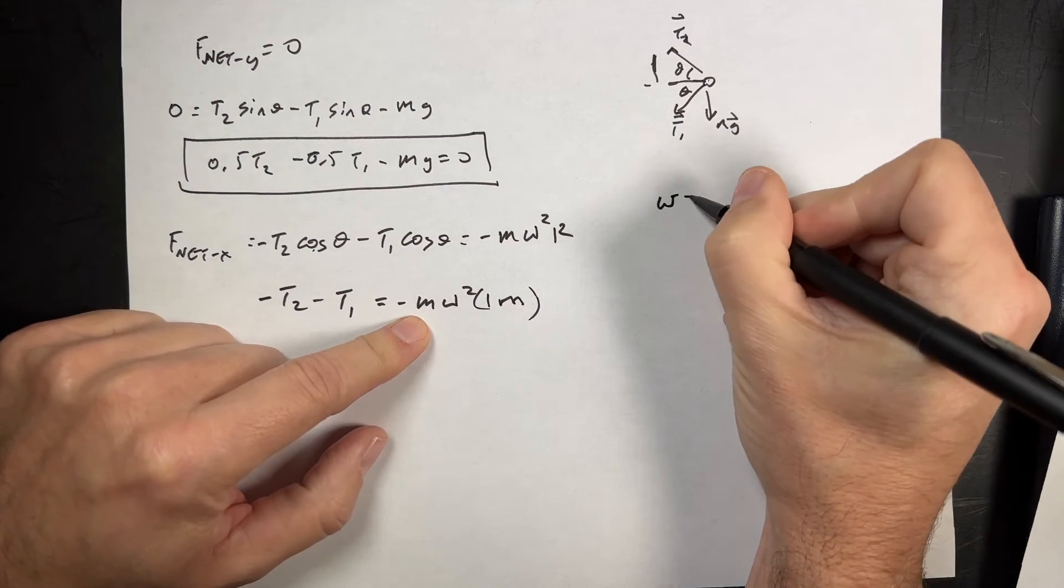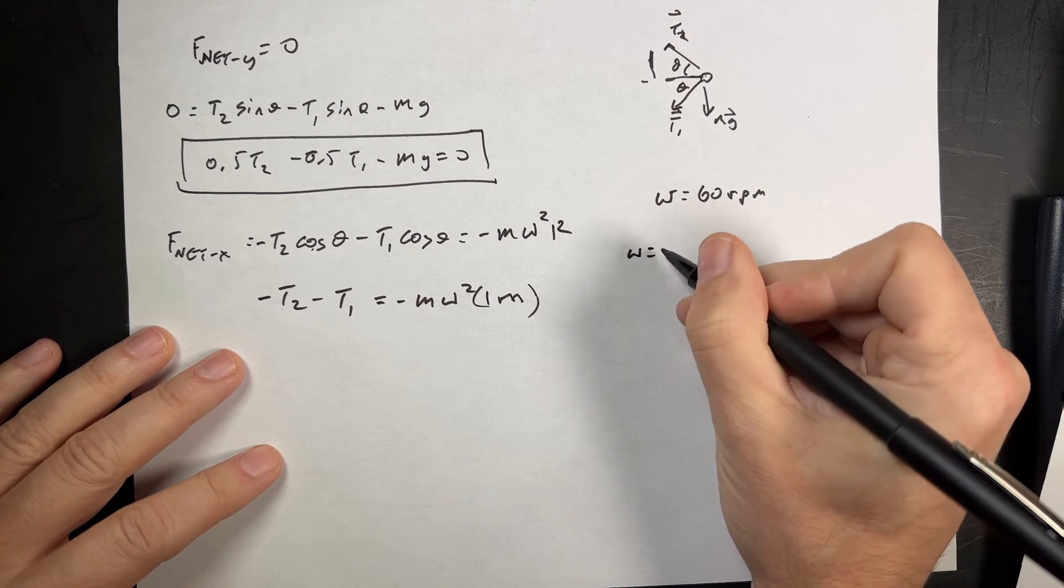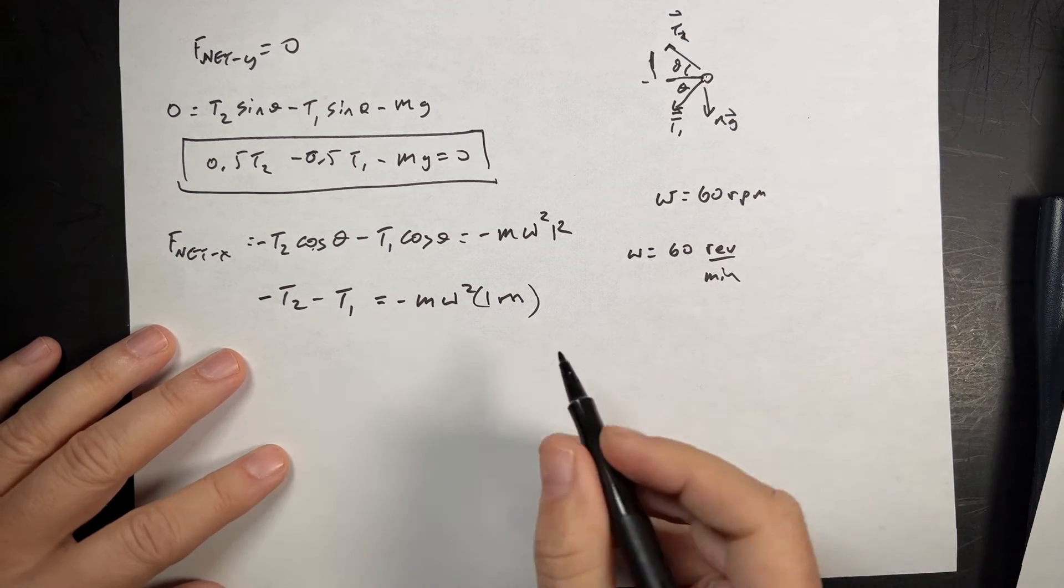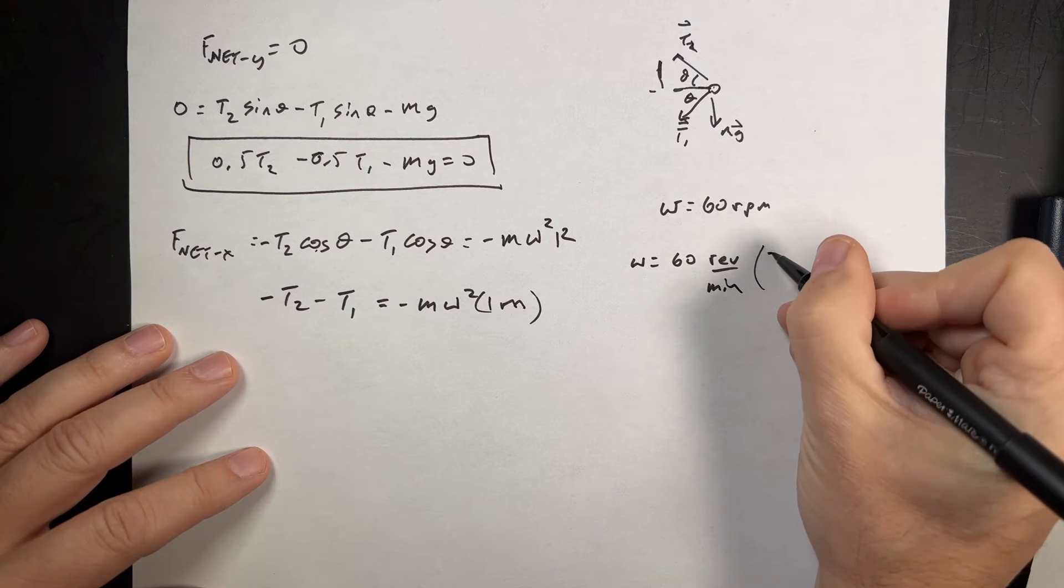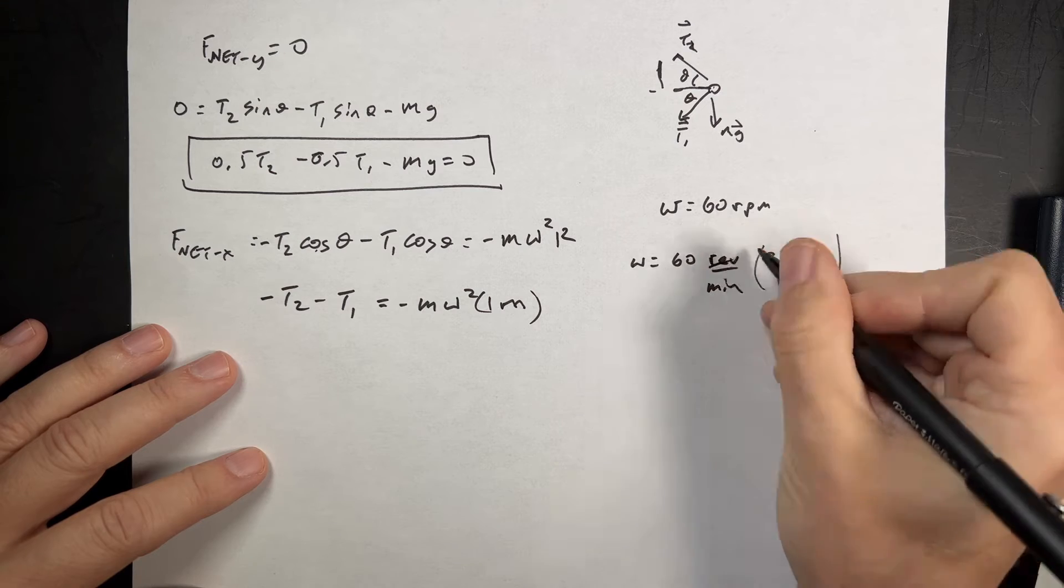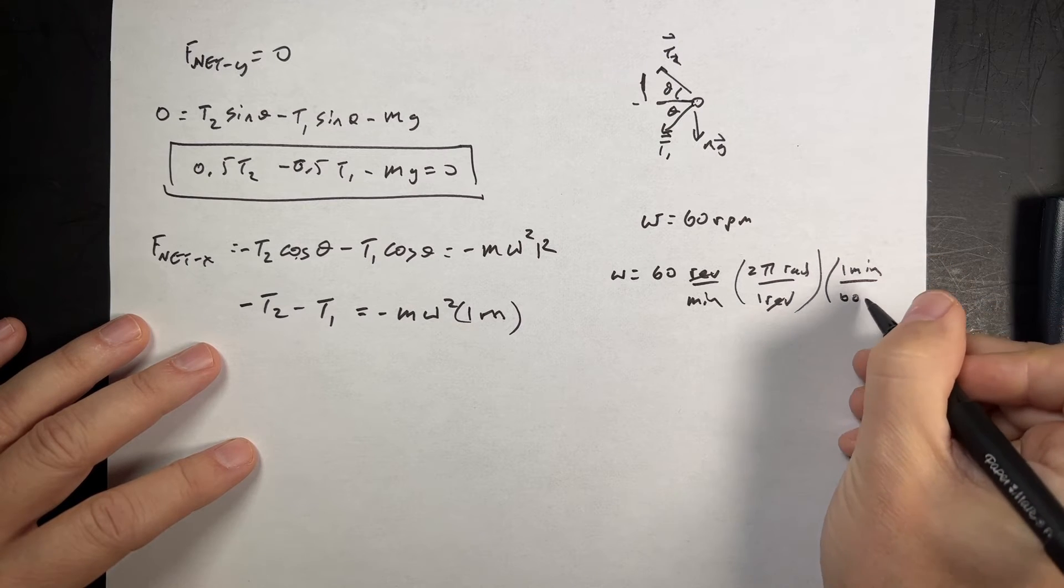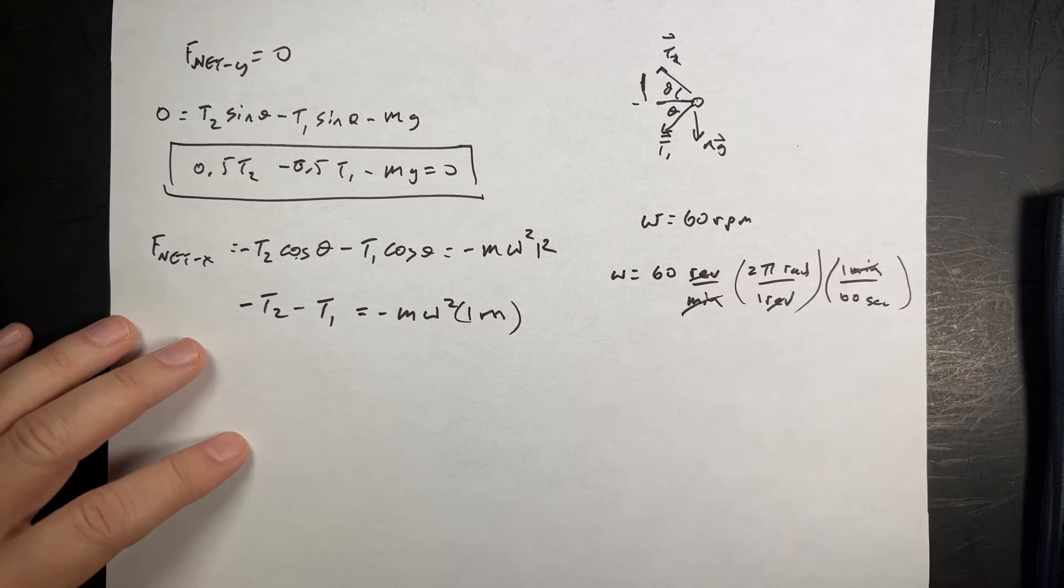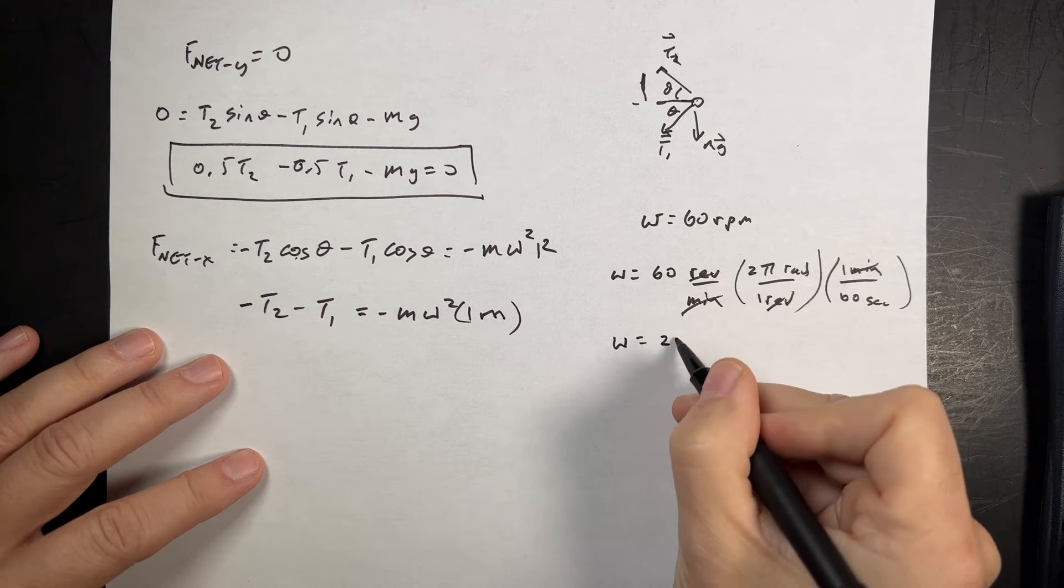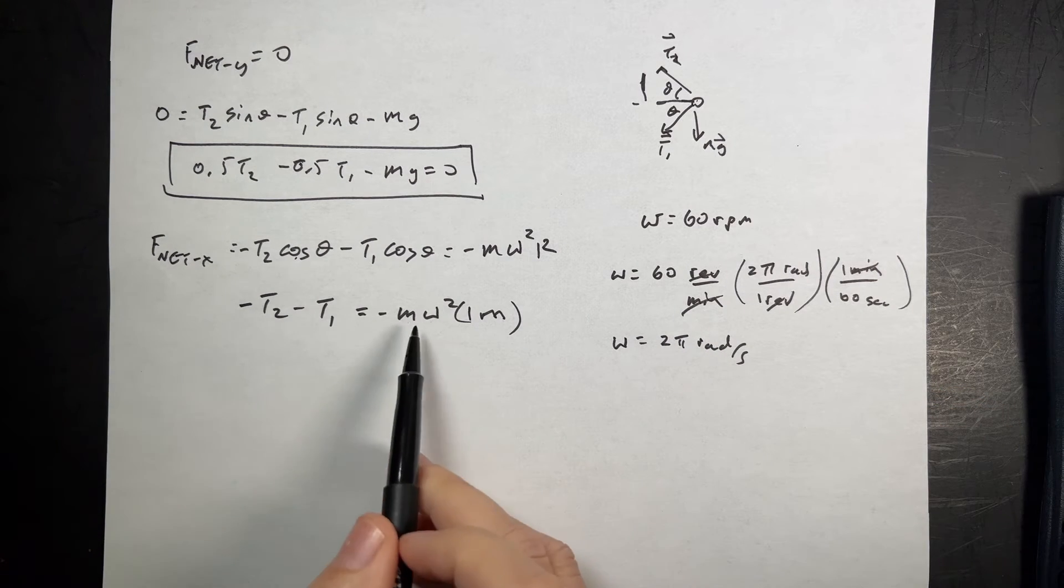Now I do know that omega, it says 60 RPM. And so omega equals 60 revolutions per minute. But I need omega and radians per second. So I'm going to multiply this by 2 pi radians per 1 revolution. And that cancels. And then I'm going to multiply this by 1 minute divided by 60 seconds. And then the minutes cancel. So now I have omega. Oh, the 60 cancels too. So omega is 2 pi radians per second. That's easy.